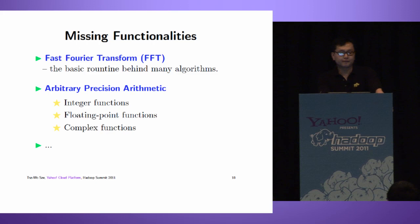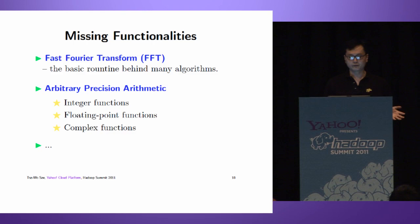What missing functionality don't we have? One major algorithm is Fast Fourier Transform, the basic routine for many algorithms. We also want a library to support arbitrary precision arithmetic - integer functions, floating point functions, complex functions, etc.